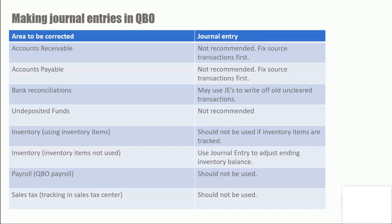What happens when we make a journal entry — should we be making journal entries, and when can we? For accounts receivable, I really don't recommend using journal entries; you should fix the source transactions first. For accounts payable, same thing — fix your source transactions. For bank reconciliations, you may use journal entries to write off old and cleared transactions. For undeposited funds, I do not recommend using journal entries — it really won't fix the problem and doesn't make it go away to just zero out undeposited funds using a journal entry.